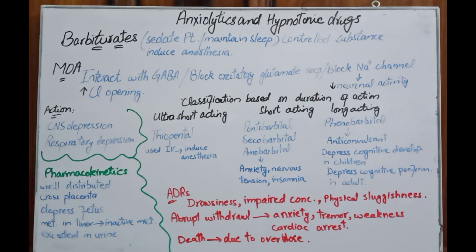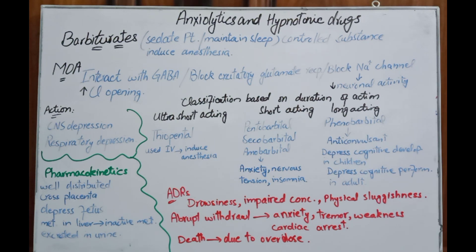Pharmacokinetics of barbiturates: they are well absorbed, well distributed, cross the fetus, and are metabolized in the liver to inactive metabolites excreted in urine. Adverse effects include drowsiness, impaired concentration, mental and physical sluggishness, and hangover — they cause sleep initially, then prolonged sleepiness when the patient is awake.